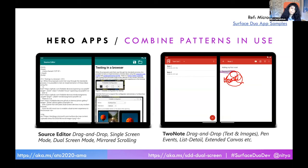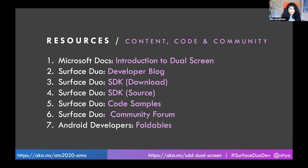One of the nice places to start if you just want to explore, reverse engineer, or emulate is to try one of the hero apps. On the left side there's a source editor — you can explore drag and drop patterns, single screen mode, dual screen mode, and mirrored scrolling. On the right side you have a two-note app that shows drag and drop, shows you how to use pen events, and uses the list detail and extended canvas patterns. I'd hugely recommend downloading the SDK and using the developer blog. The Surface Duo developer blog has a ton of tutorials, with one coming out almost every week, showing how to try out these design patterns for various front-end frameworks — not just Android but also web, Xamarin, Flutter, and even a Unity sample.